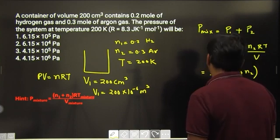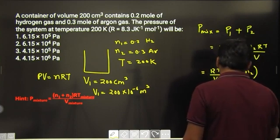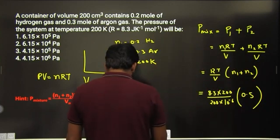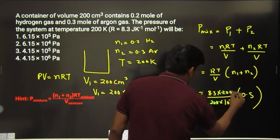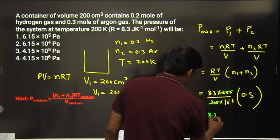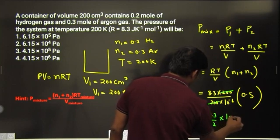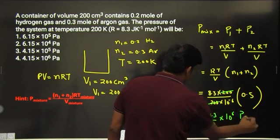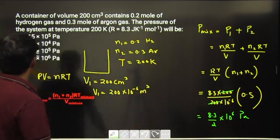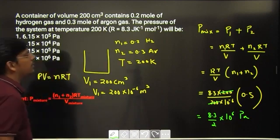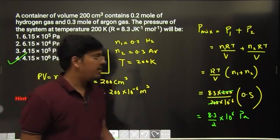Now we are going to cancel few things. 200 and 200 get cancelled, this is 8.3 divided by 2 into 10 to the power 6 Pascal, so which is 4.15 into 10 to the power 6 Pascal. Option 4 is definitely chosen as the correct one, dear students.